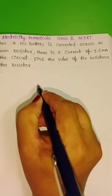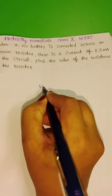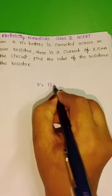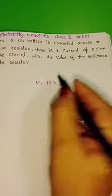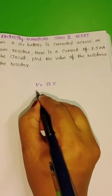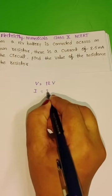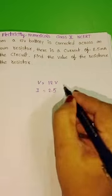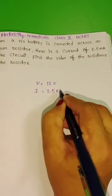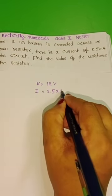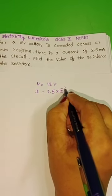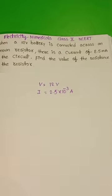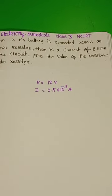Let's solve this problem. We know the potential difference is 12V, and the current is 2.5mA — convert mA to ampere: 2.5 into 10 power minus 3 ampere.